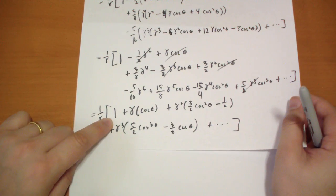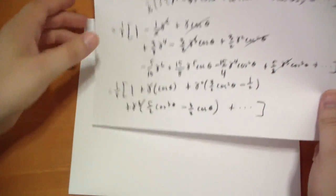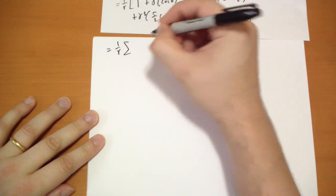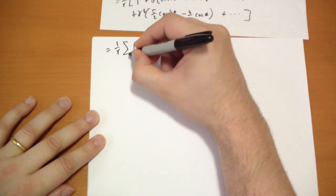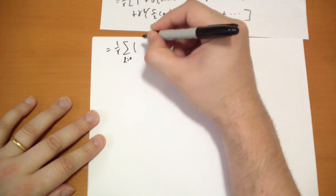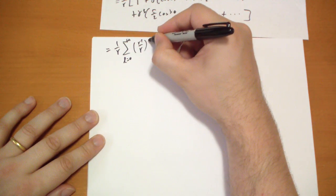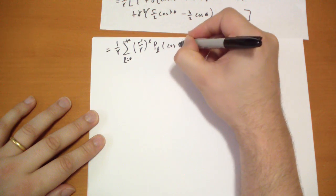So we get this funky-dunky awesome formula: times the sum of, we're gonna go L equals 0 to infinity, of (R prime over R) to the L, times P_L of cos theta.